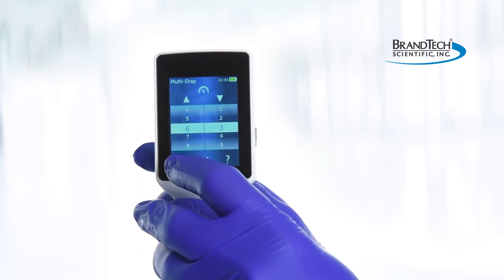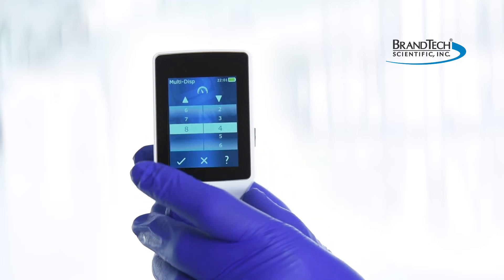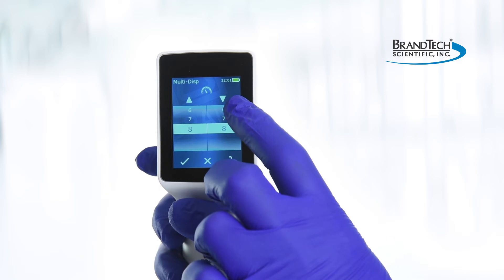Set the desired aspirating and dispensing speeds by swiping vertically up or down. Then tap to confirm.